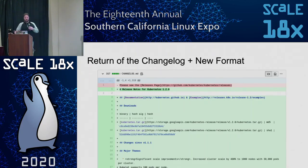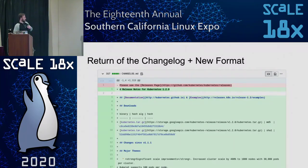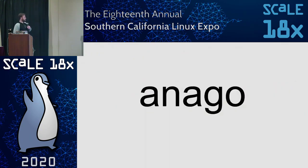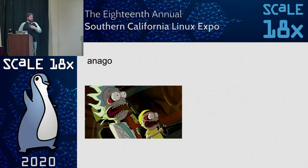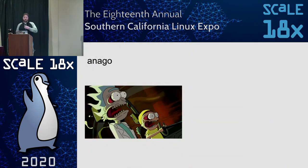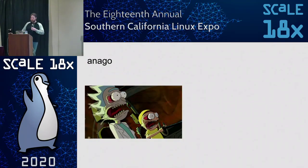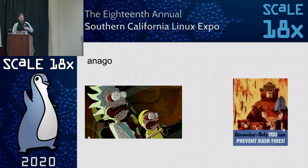Then a whole new format came along — a cleaner page with a lot more information, though it seemed a little auto-generated. What made this? A tool called Anago, written in Bash. As with everything in Kubernetes, we have to over-engineer a solution and first write it in Bash. It worked well for kube-proxy, and it would surely work well with our release tooling.